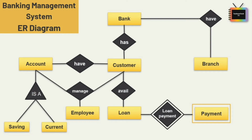These are the relationships defined among the six entities. Now let's see the cardinality ratio between them. One bank can have many branches, and there can be many customers in one bank — so one bank can have many customers. Next, a customer can have multiple accounts, so let's add a one-to-many relation here.